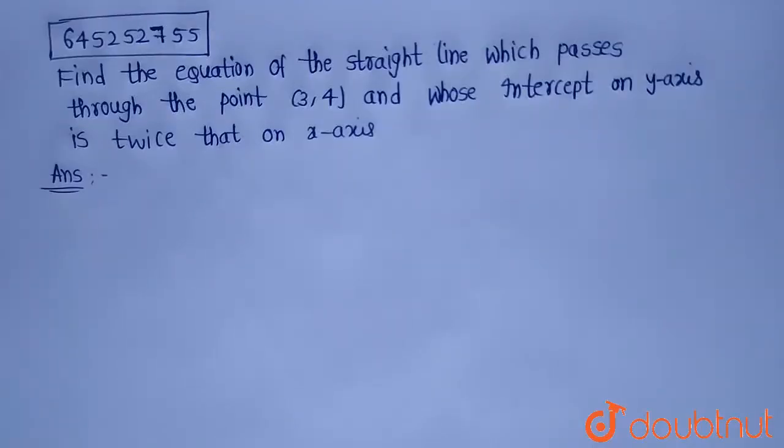Hello everyone, today's our question is: find the equation of the straight line which passes through the point (3,4) and whose intercept on y-axis is twice that on x-axis.